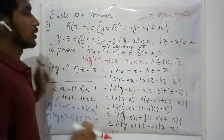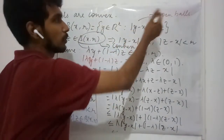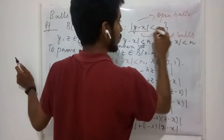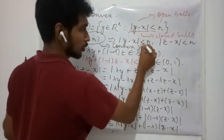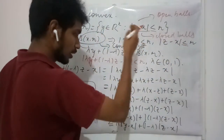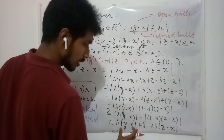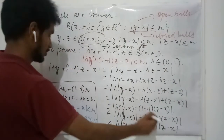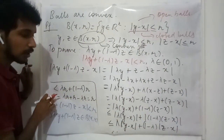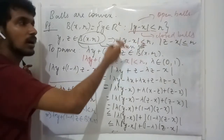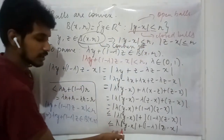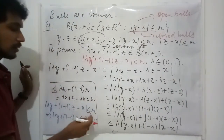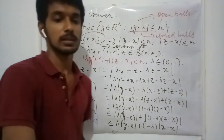We have proved this for open balls. When we need to prove this for closed balls, we include the equality, so the condition becomes less than or equal to r. The procedure follows similarly: since we had the absolute value of y minus x less than or equal to r, we get less than or equal to at each step, and this proves the result is true for closed balls as well.